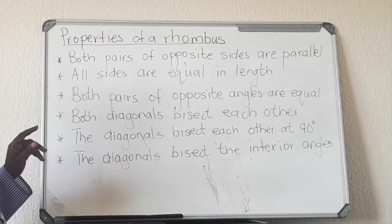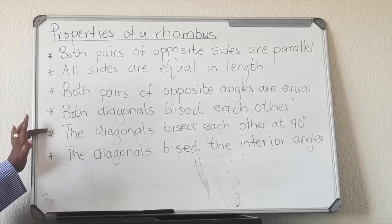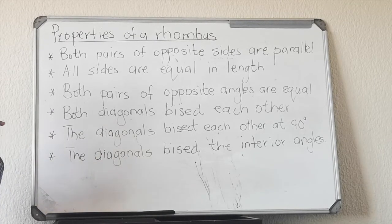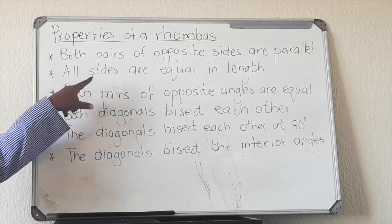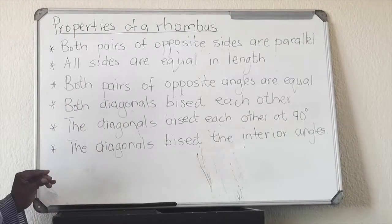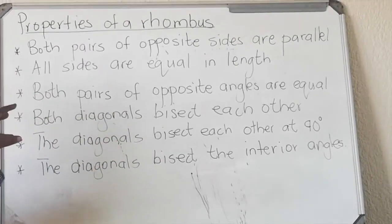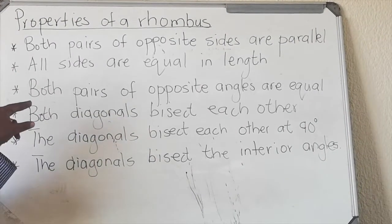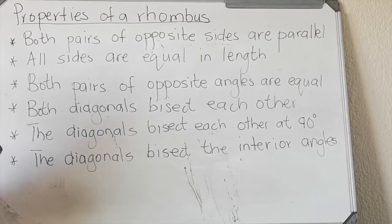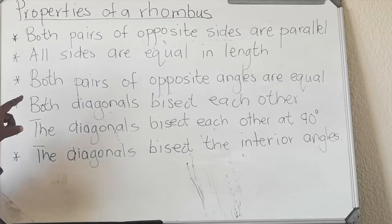Today we are looking in particular at the properties of a rhombus. The first four are properties of a parallelogram and the last two are specifically for a rhombus. The first property says both pairs of opposite sides are parallel. With all other parallelograms except for a rhombus and a square, opposite sides are equal, but with the rhombus and square all sides are equal in length.